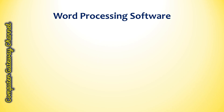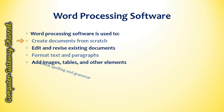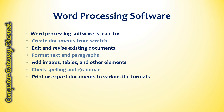Word processing software is used to create documents from scratch, edit and revise existing documents, format text and paragraphs such as font, size, color, and alignment, add images, tables and other elements, check spelling and grammar, and print or export documents to various file formats.